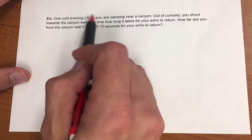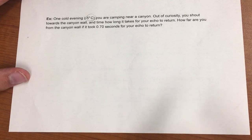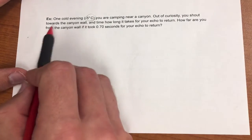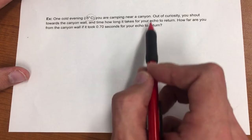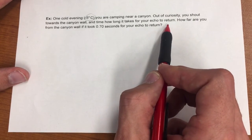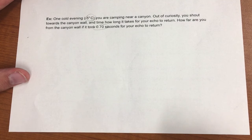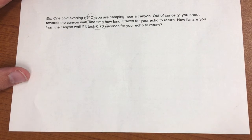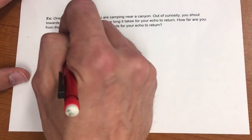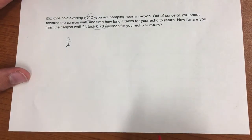Next, we've got a cold evening with negative 5 degrees Celsius. We shout towards canyon wall and time how long it takes for the echo to return. How far are you from the canyon if it took 0.70 seconds for your echo to return? These echo problems are a little bit tricky because we have to think about the path that the sound has to travel.